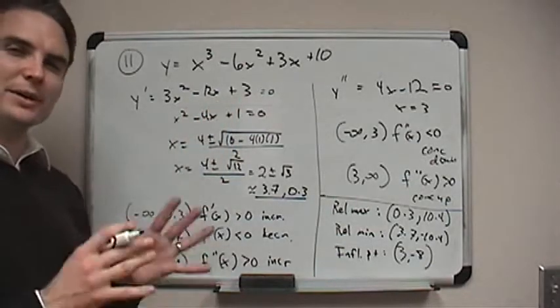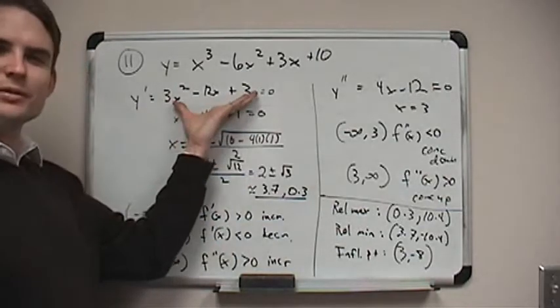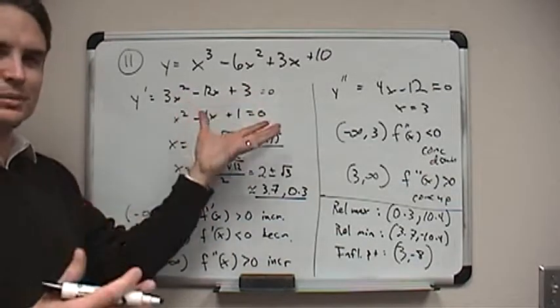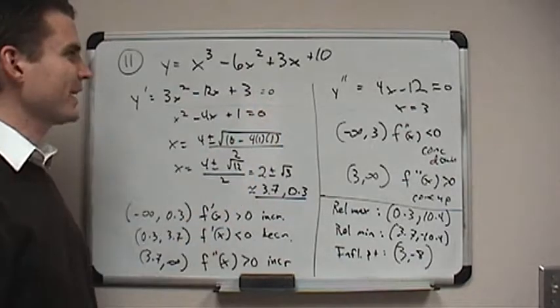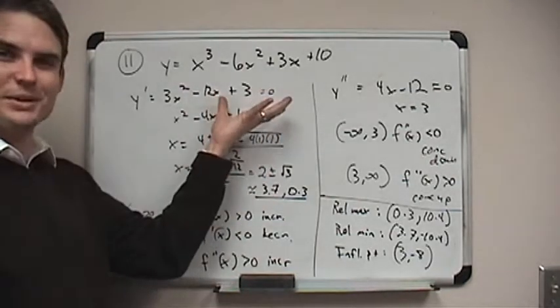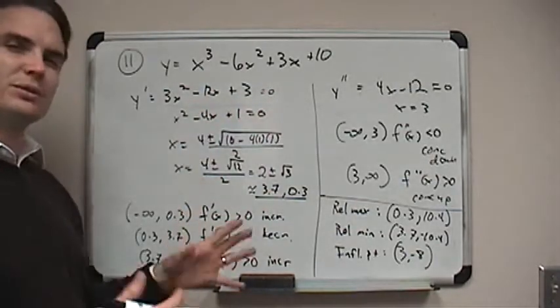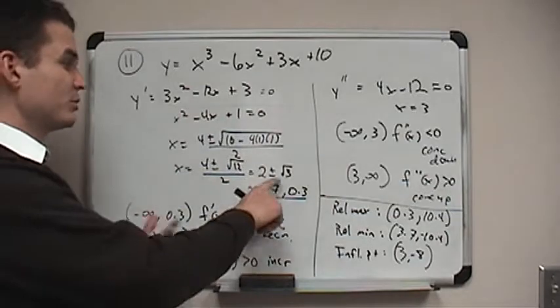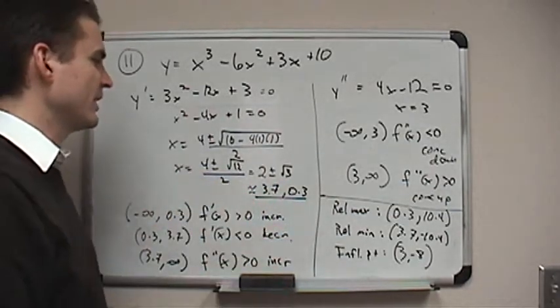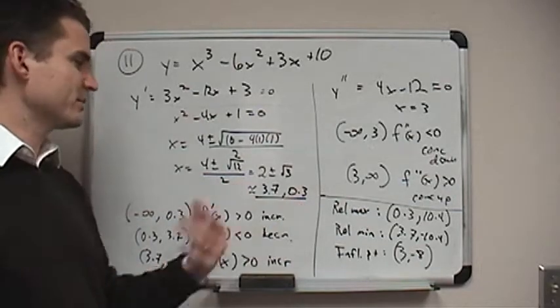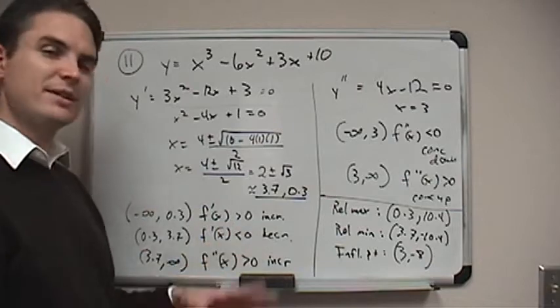So remember, to find critical numbers, I look for when the derivative is either 0 or undefined. Well, this derivative can never be undefined. There's no division by 0 or anything. So I just set it equal to 0 and solve for x. Now the book is great about doing this. You know, sometimes these equations aren't easy to solve. This is a quadratic equation, but it does have two kind of unusual solutions, 2 plus the square root of 3 and 2 minus the square root of 3. You can find them using the quadratic formula, but I just rounded them to 3.7 and 0.3. So those are the two values that make the derivative 0.